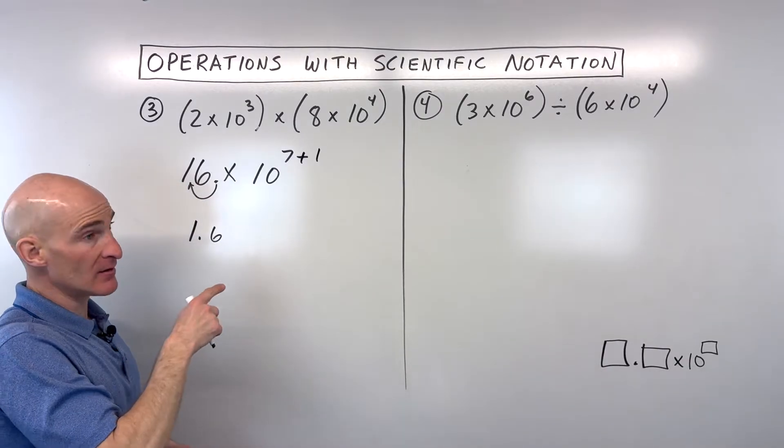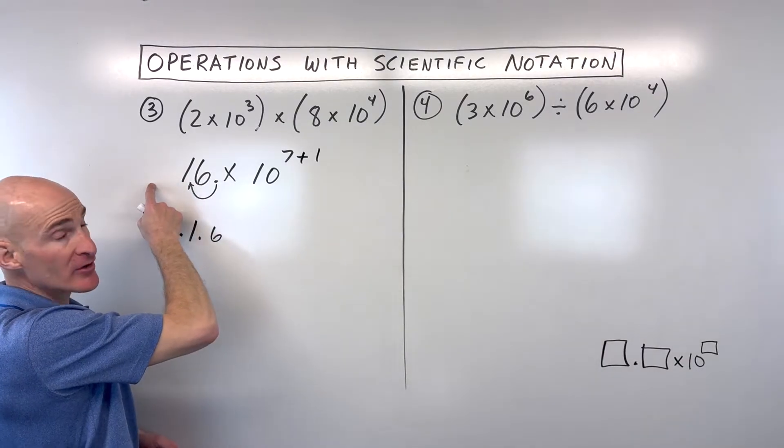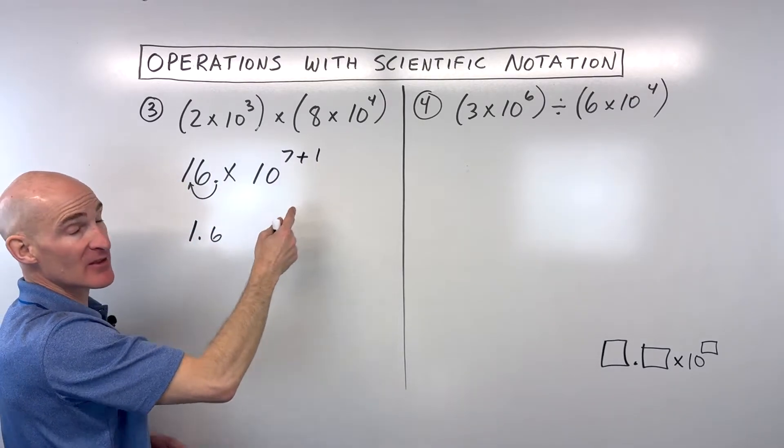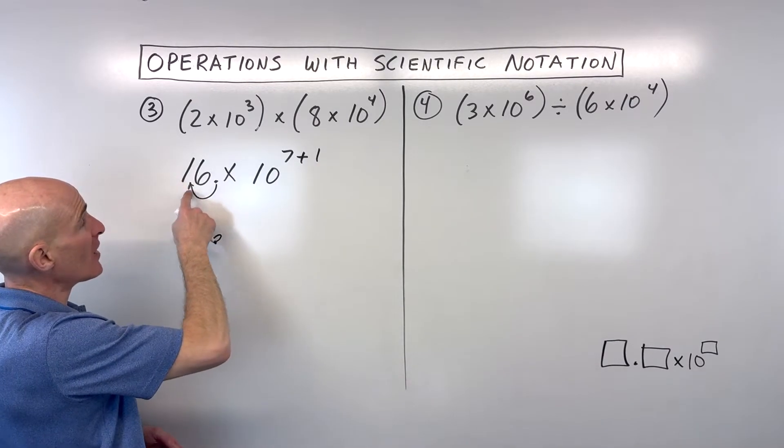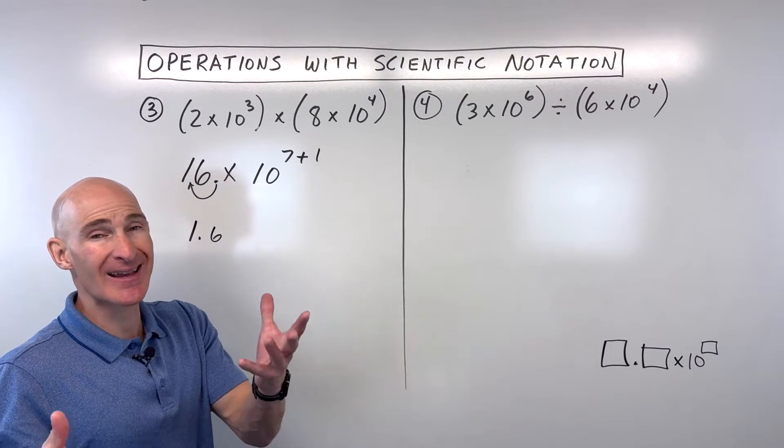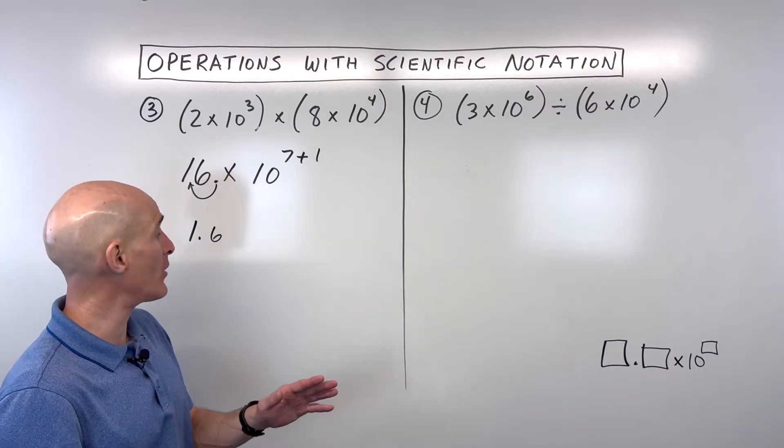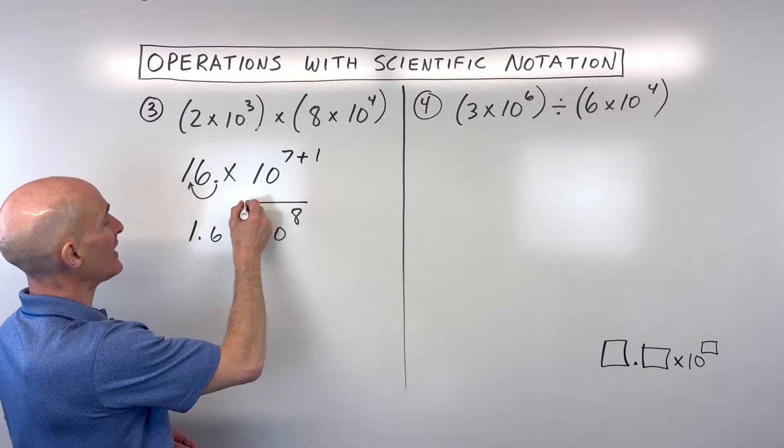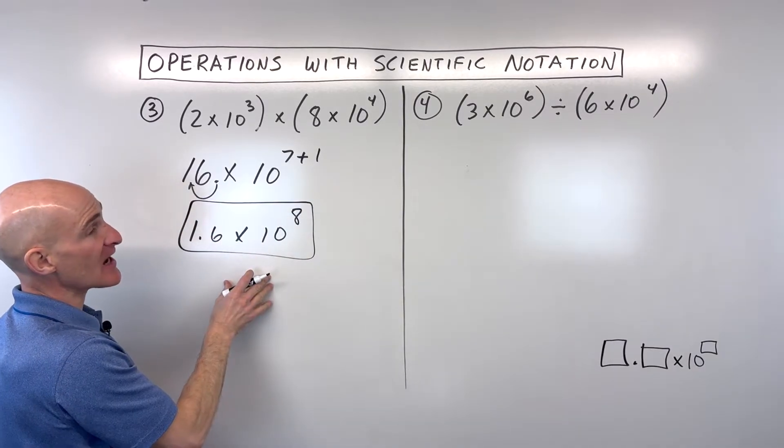Now if I move this two places, I'd be making it smaller by 100, so I'd have to make this larger by adding 2. If you move it three places, you have to make this 3. Now what happens if you move it the other way? Then you're making it larger, you'd have to subtract and make this smaller. You're trying to counterbalance so you don't change the overall value of the number. So in this case, we get 1.6 times 10 to the 8th, and you've got it in scientific notation.